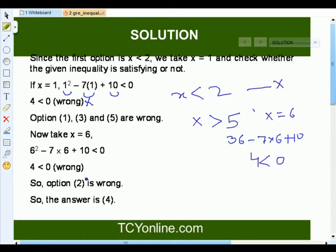That makes it simply equals to 4 less than 0. Again, that is not possible. So, that means x greater than 5 is also wrong. So, that means 1 and 3rd and the 5th option is wrong.